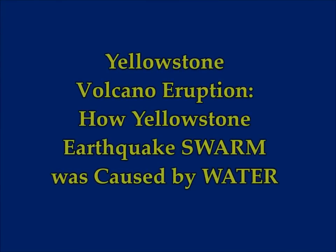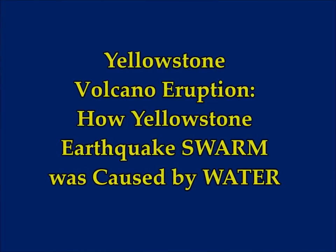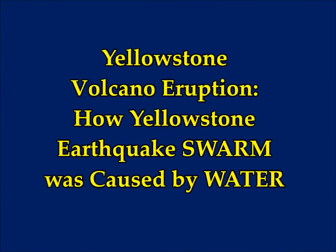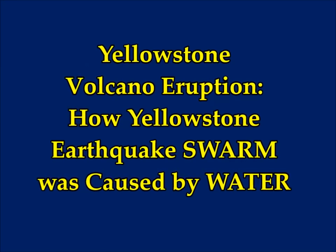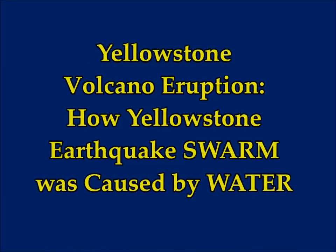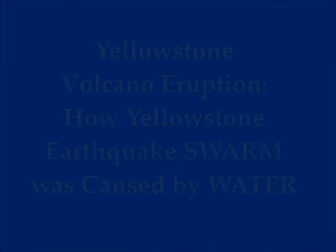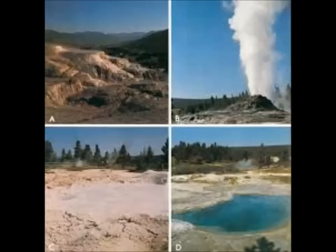The latest on Yellowstone Volcano — the supervolcano eruption — and how a Yellowstone earthquake swarm was caused by water. Yellowstone National Park was hit by a mega swarm last year, and since then scientists have been analyzing data to discover what the real reason was behind it all. This is by Amani Hughes on Express UK.